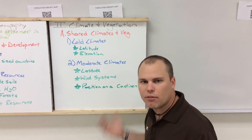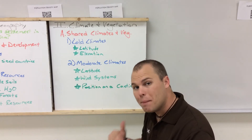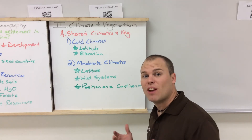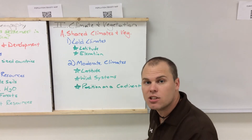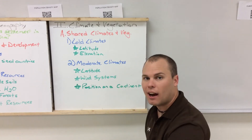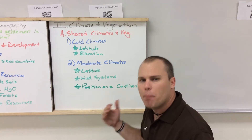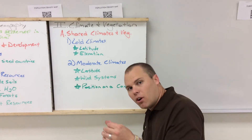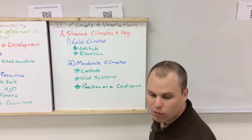Moderate climates are shared based on latitude — mid-latitude zones have more moderate climates. Wind systems, specifically prevailing westerlies blowing from west to east, create warmer areas in Canada and the United States. The rain shadow effect on the western side of mountains can push warmer air eastward. Mainly, sharing a moderate climate revolves around your position on the continent — being slightly north of the Great Plains versus the same latitude east of the Great Plains can produce different climates.